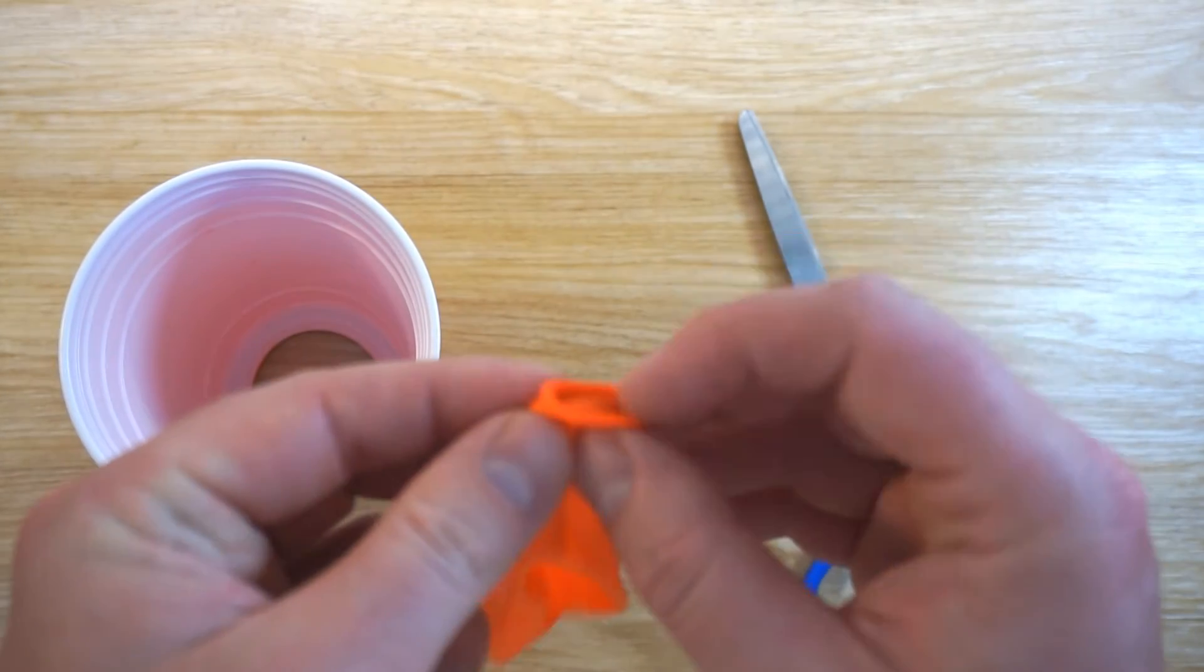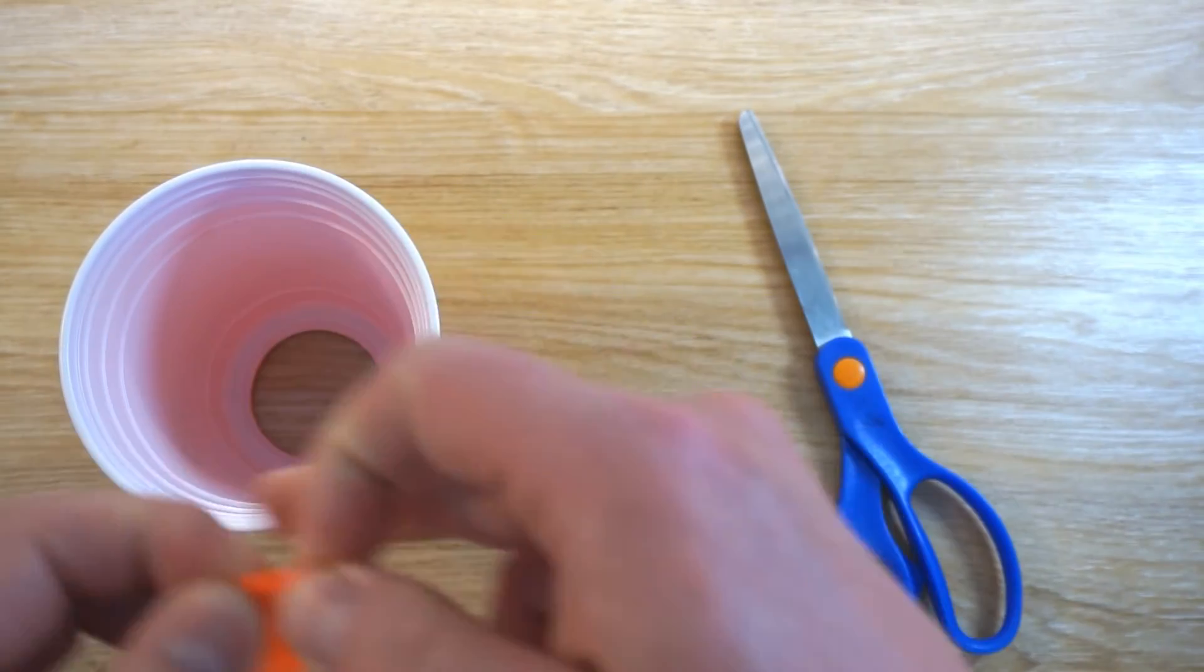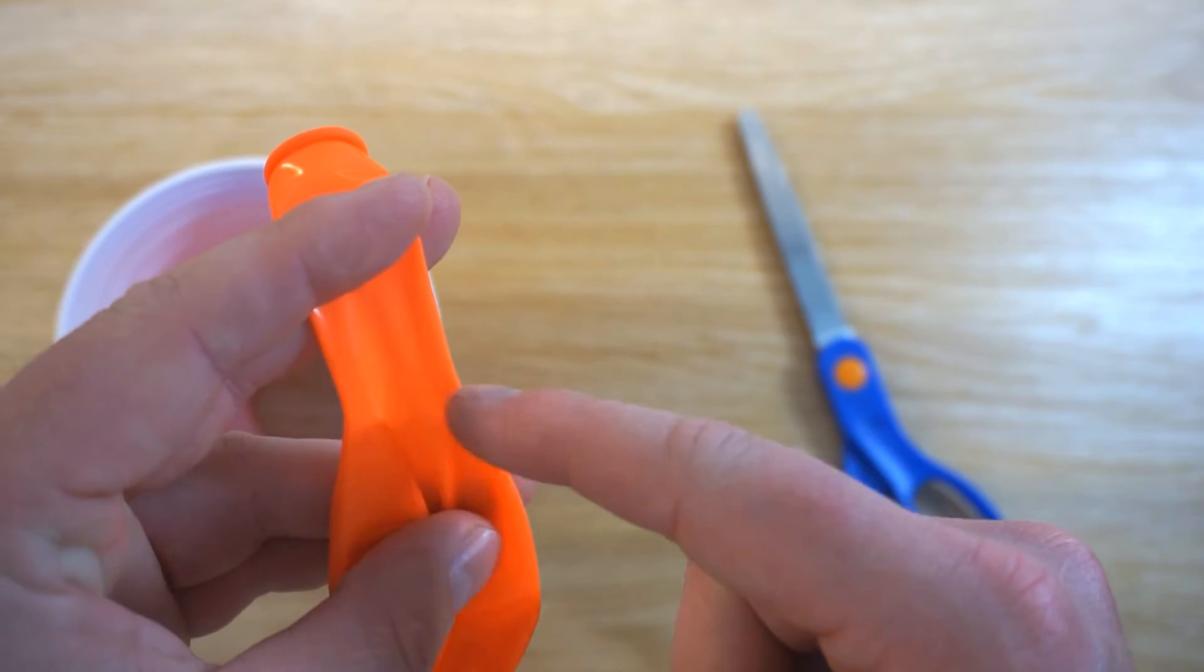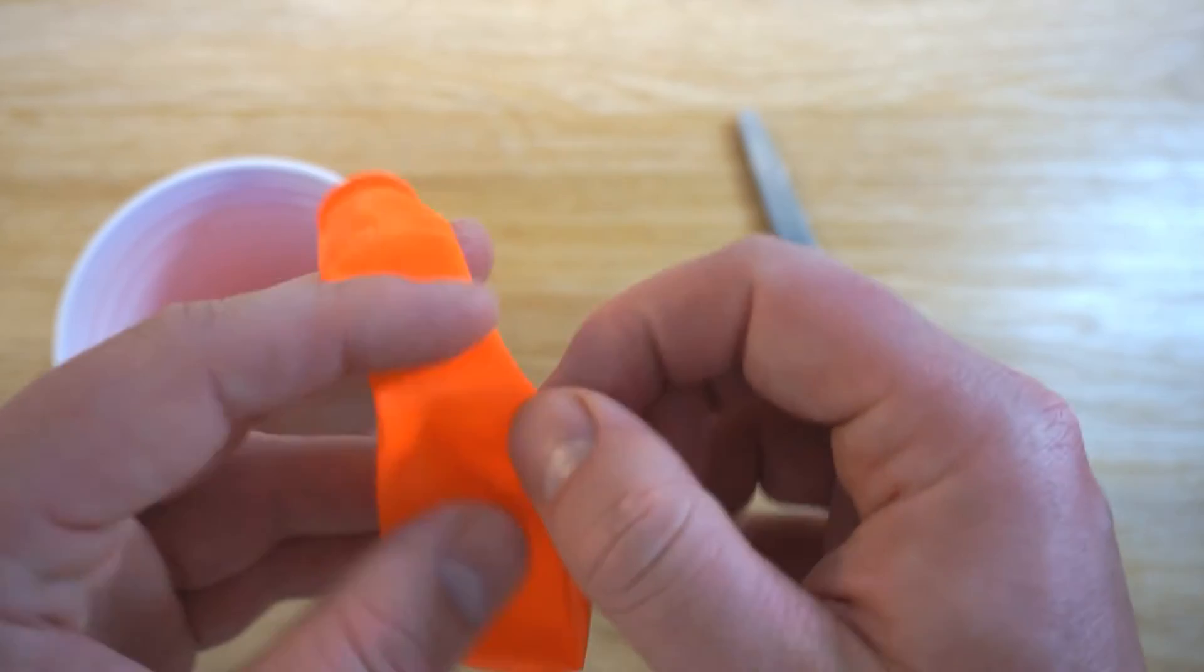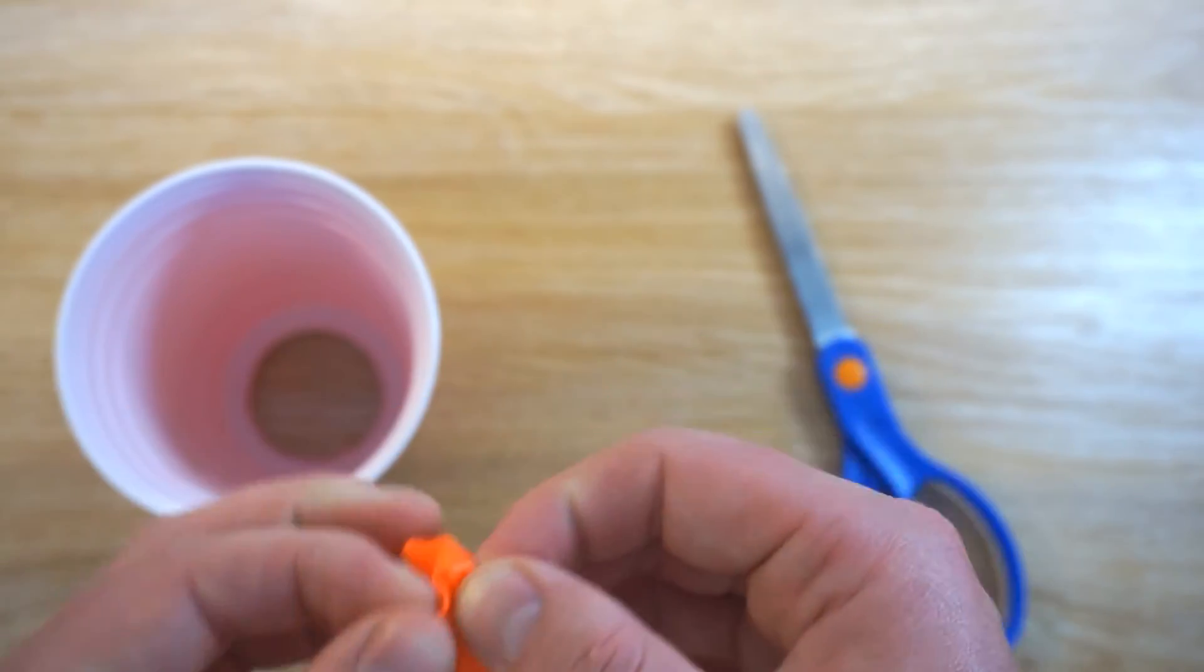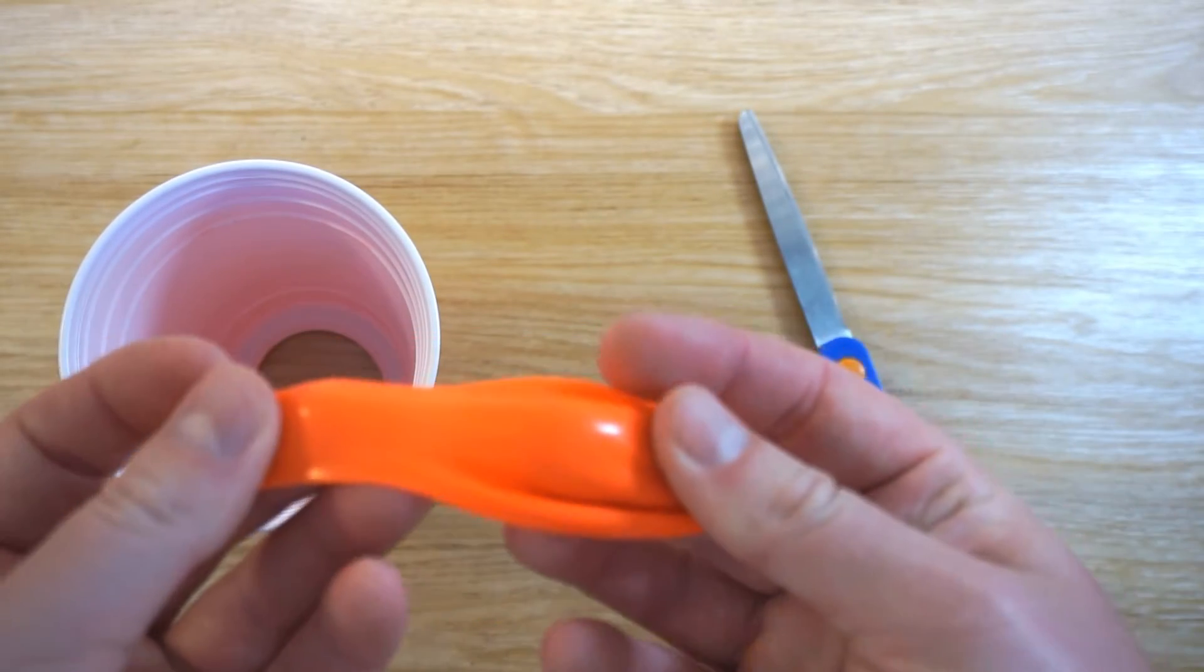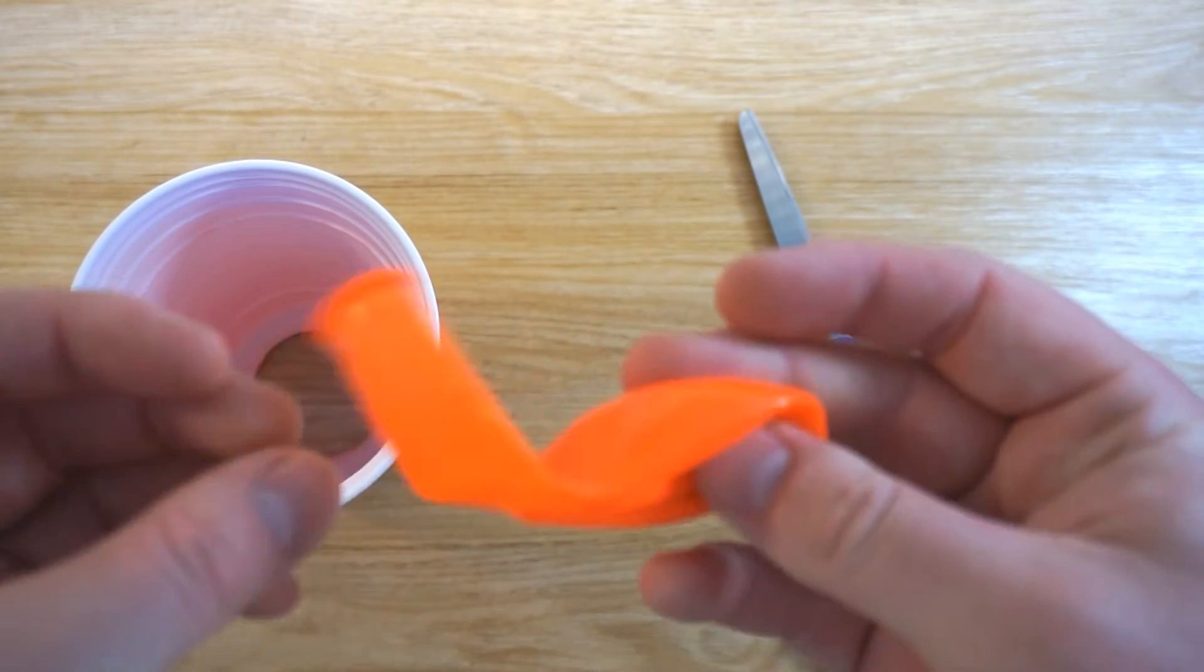This opening of the balloon isn't big enough to stretch over the wide opening of the cup. So what we need to do is cut the balloon about here, which gives us a wider and more stretchy opening, which will hopefully fit over the cup. Sometimes it doesn't, sometimes these rip. So it's good to have a few spare balloons just in case.